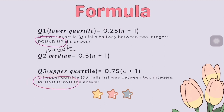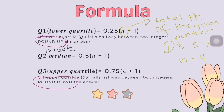N is the total number of values given. For example, if we have 1, 3, 5, 7, then N equals 4, because there are 4 numbers.